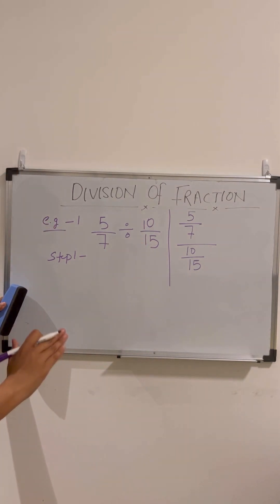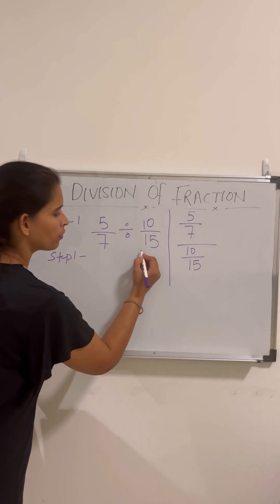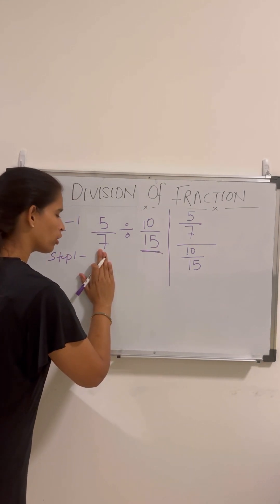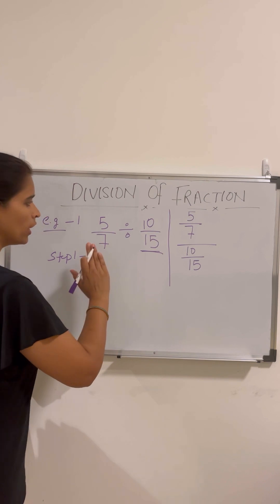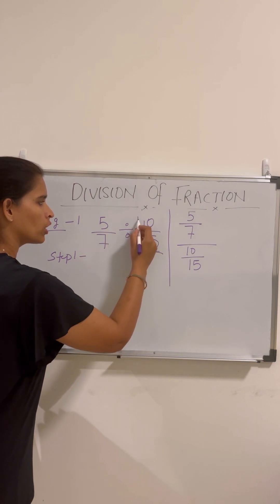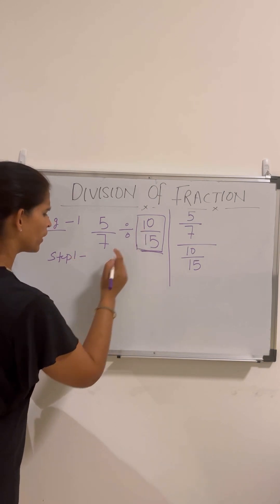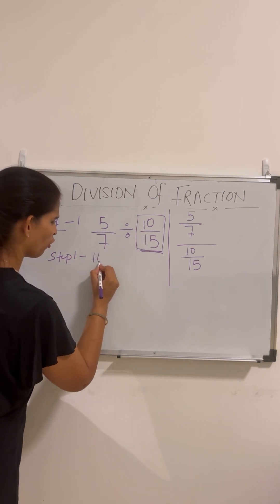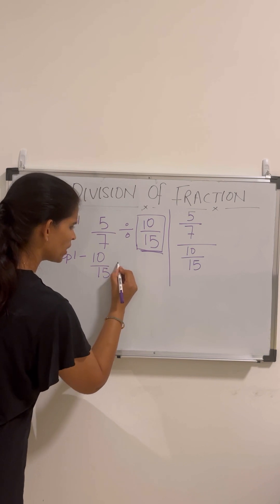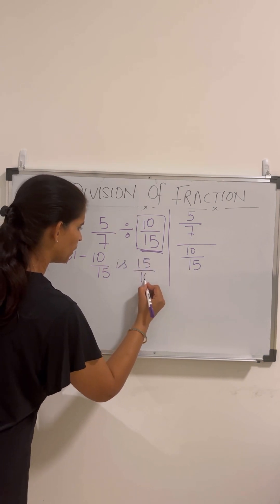Just keep in mind that we need to find the reciprocal of the second fraction only — not the first fraction, and not both of them. So the reciprocal of 10/15 is 15/10.